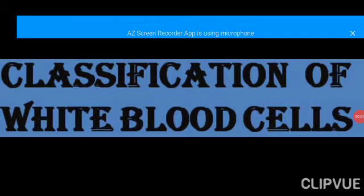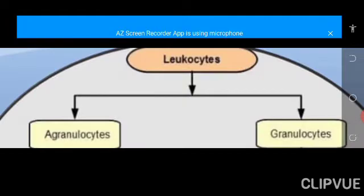Classification of white blood cells. Note that white blood cells are also known as leukocytes, and we can broadly classify them into two groups. The first group are called the agranulocytes — the type of white blood cells without visible granules when looked at under a microscope. The second group are called granulocytes, which is the opposite of agranulocytes; they have visible granules in their cytoplasm.